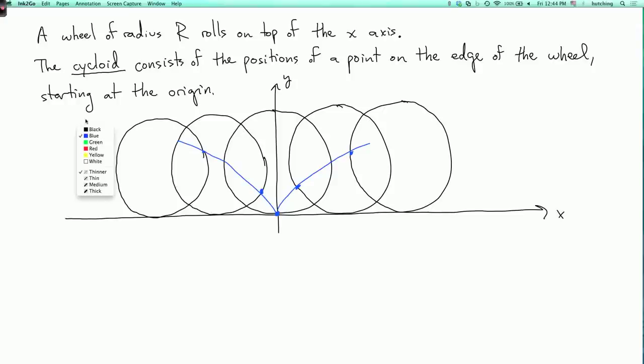So I now want to write down parametric equations for the cycloid. And how can we do this? Well, it helps to decompose the motion into two parts. So let's first look at the position of the center of the wheel.